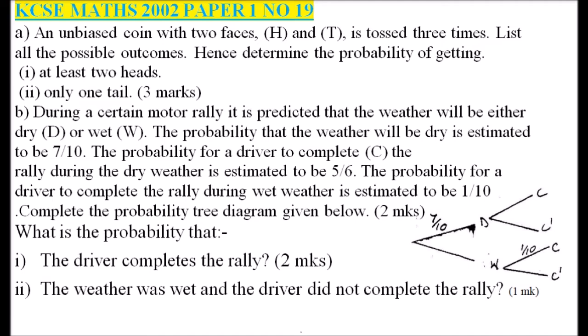Part B: During a certain motorally, it is predicted that the weather will be either dry or wet. The probability that the weather will be dry is estimated to be 7 over 10. The probability for a driver to complete the rally during dry weather is 5 over 6, and the probability of completing during wet weather is 1 over 10. Complete the probability tree diagram and find the required probabilities.